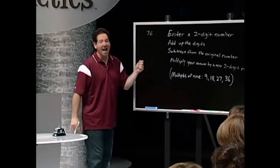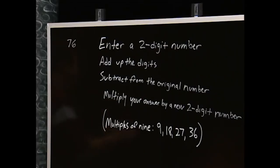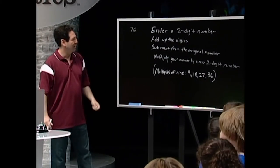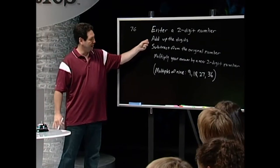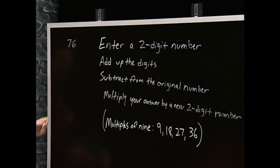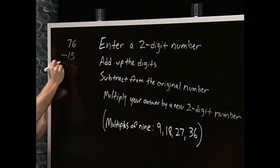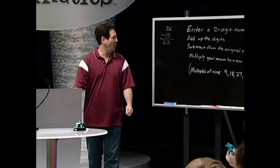Step number two, add up the digits in your head. And you guys could all do that. Seven plus six is 13. So add up the digits in your head. Now, subtract that sum from the original number. So I would subtract 13 from my number. 76 minus 13 is 63. You guys do it into your calculators.